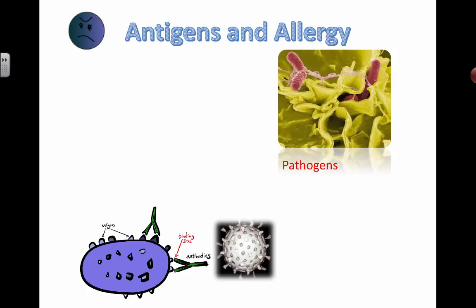Let's look at these terms: antigens and allergies. Antigens are actually proteins. Lots of things are made up of proteins in biological organisms and cells. Proteins are coded for by DNA and get produced through transcription and translation. We're talking about antigens as they relate to the immune system.